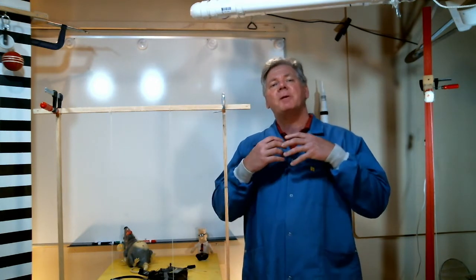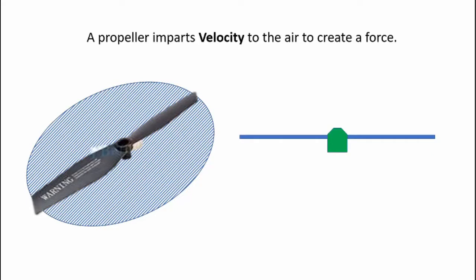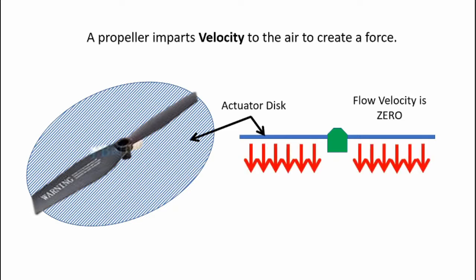Now let's go ahead and look at the basic physics associated with how propellers produce thrust. A propeller imparts velocity to the air to create a force. Now engineers refer to the disk swept out by the propeller as being the actuator disk. Above the actuator disk the flow velocity is essentially zero. The propeller imparts velocity to the air and creates a high velocity flow on the bottom side of the propeller.